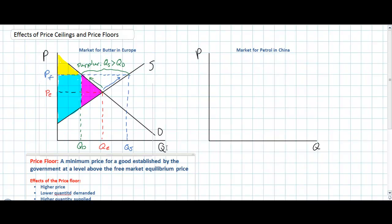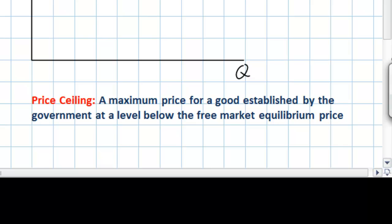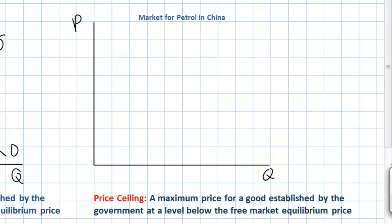Next, let's talk about a price ceiling. A price ceiling is defined as a maximum price for a particular good established by the government at a level below the free market equilibrium price. The purpose of a price ceiling is to help the consumers of a good rather than the producers. Let's look at the market for petrol in China to examine the effects of a price ceiling.